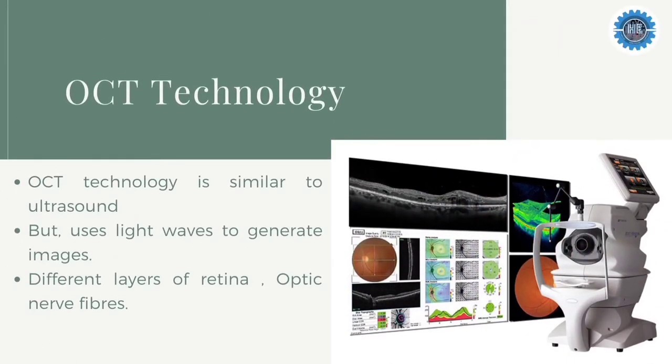Optical Coherence Tomography is often described as analogous to ultrasound, but the major difference is that OCT uses light waves instead of sound waves for imaging. It is an excellent way to visualize the different layers of the retina, and it takes cross-sectional pictures of the distinctive layers of retina, layers of retinal nerve fibers, and the optic nerve head.